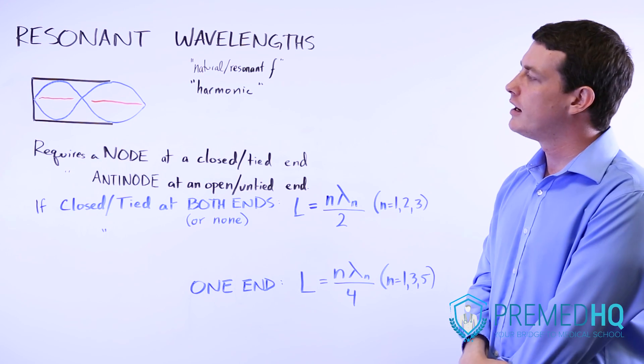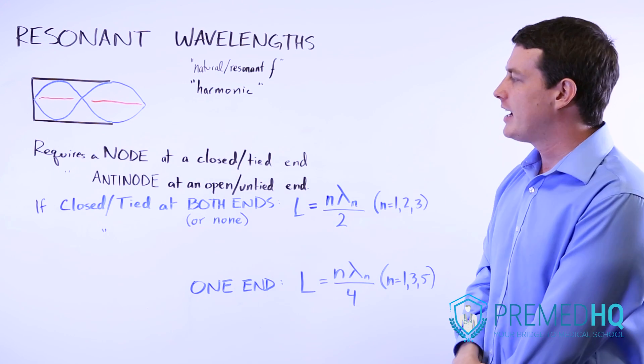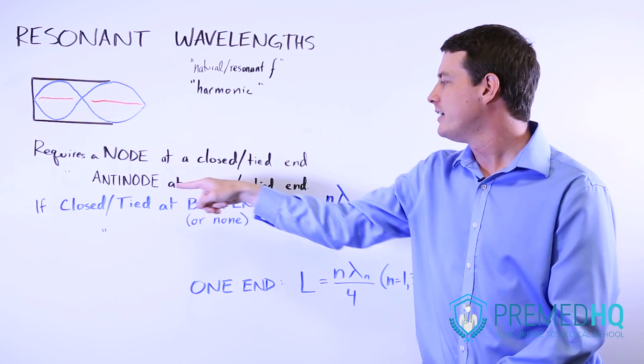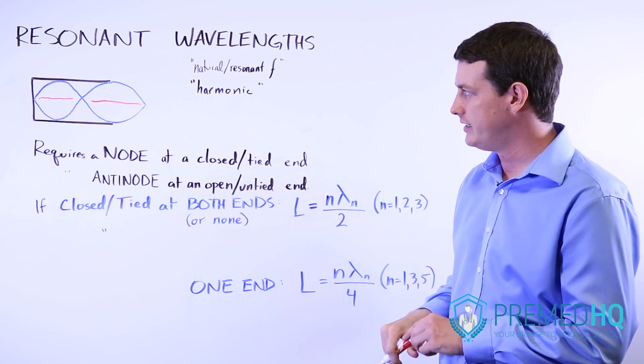In order for a wavelength to be considered resonant, it has to have a node at any closed or tied end and an anti-node at any open or untied end.